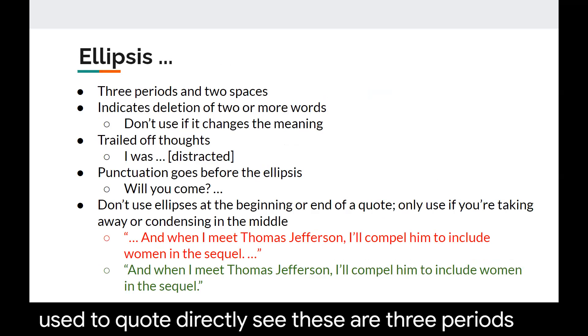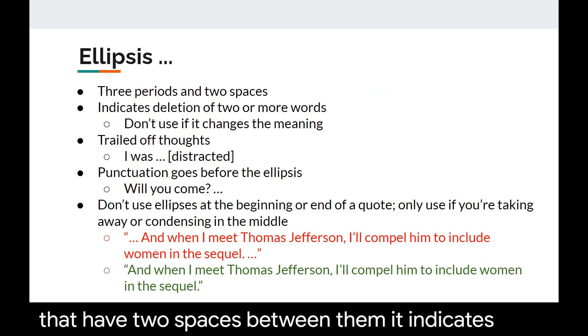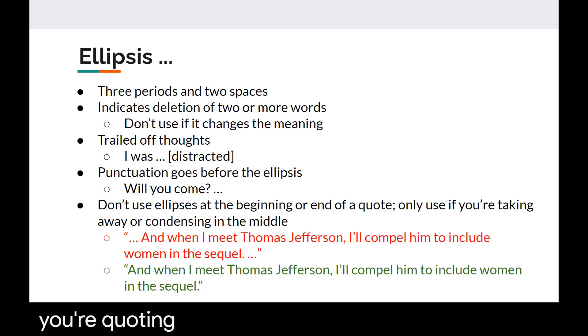Ellipses are three periods that have two spaces between them. It indicates the deletion of two or more words from something that you're quoting but you should never take away words if it changes the meaning of the quote. Another way to use an ellipses is if you're trailing off in your thoughts. So if you wanted to write like I was you know and you're having a squirrel moment where you're really distracted then you're going to use the ellipses to indicate that. A punctuation always comes before the ellipses if you are indicating the deletion of things that happen after that full sentence and then don't use ellipses at the beginning or end of a quote. Only use if you're taking away or condensing words in the middle. So if I was quoting Angelica from Hamilton for instance I would want to use the second sentence even if there are words before or after those lyrics because I'm not taking away words in the middle of what she's saying.